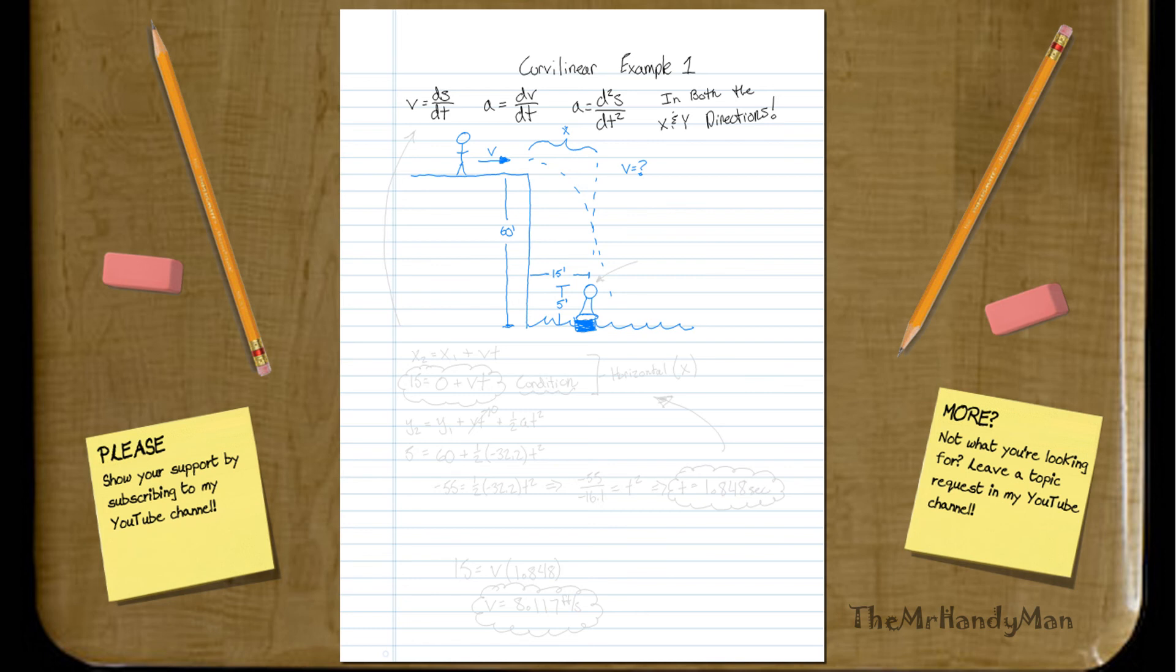So let's just work that out. What you'll have is, let's just do the horizontal distance. Here's our equation: x2 equals x1 plus Vt. And that's just determined from the above equation. So what you find is that he needs to travel 15 feet, and he's starting at zero. Let's just say the cliff's edge is zero.